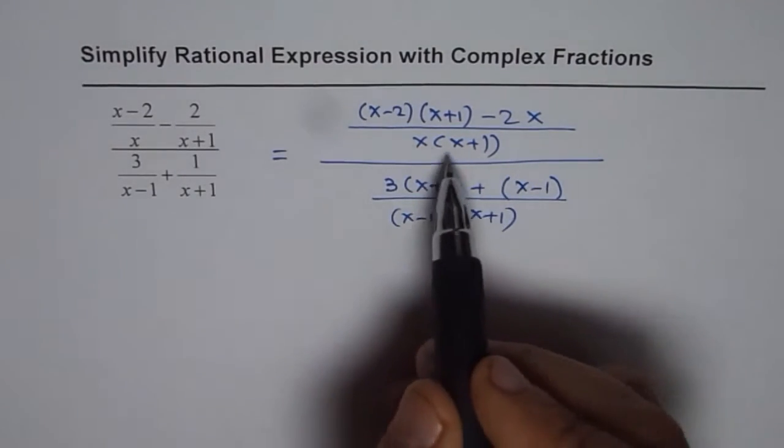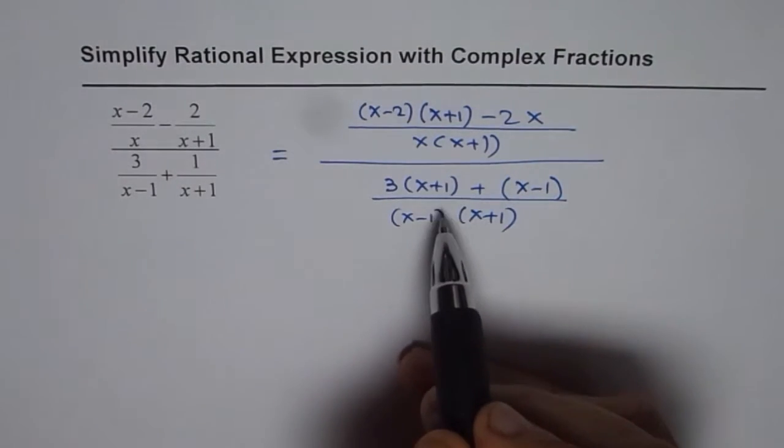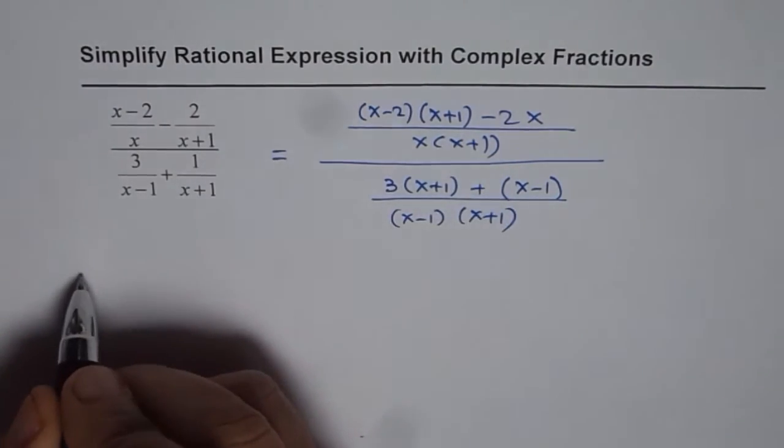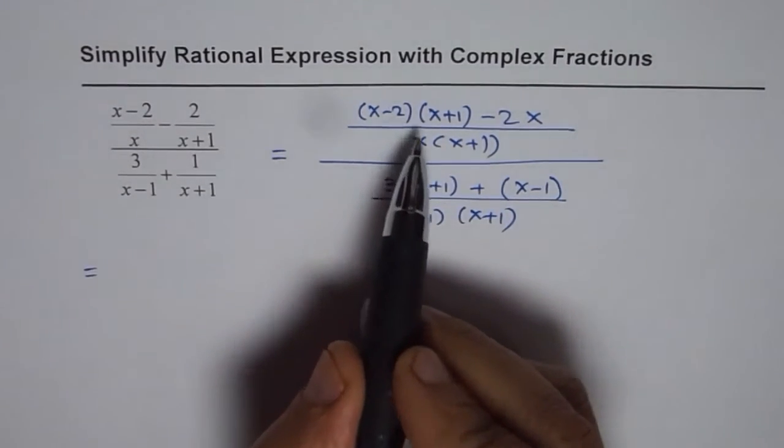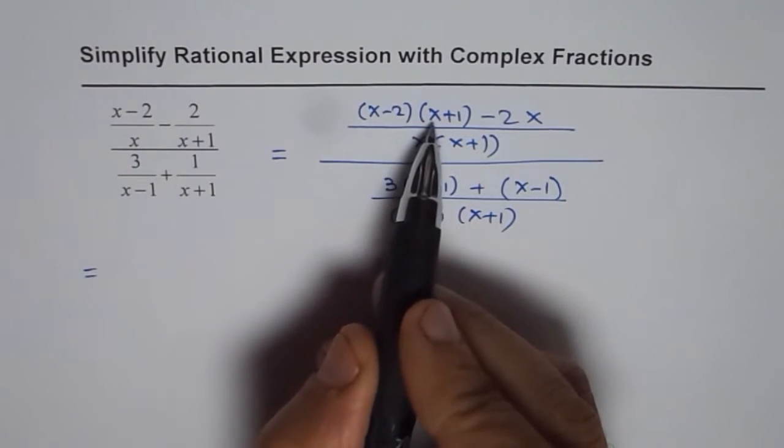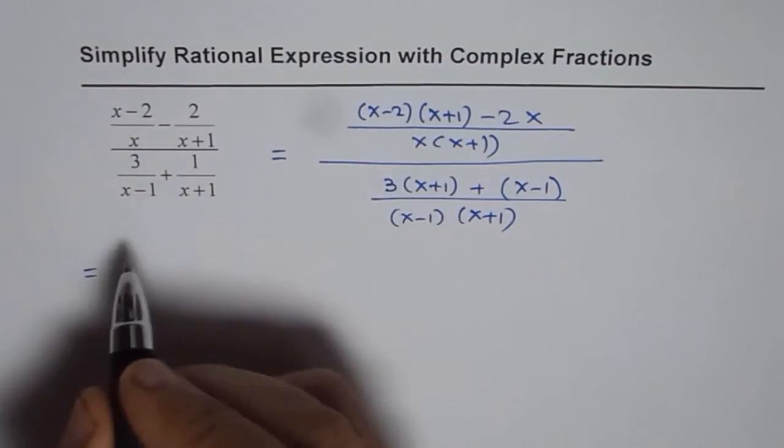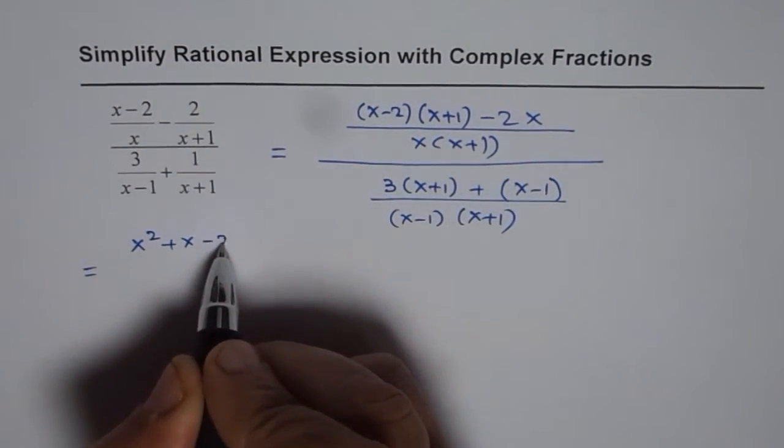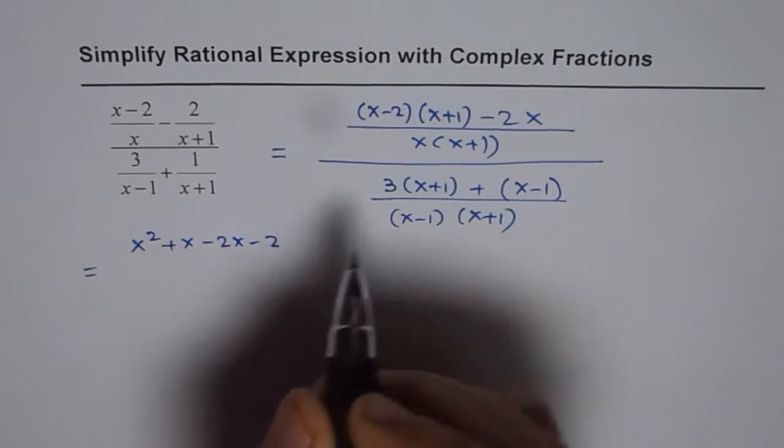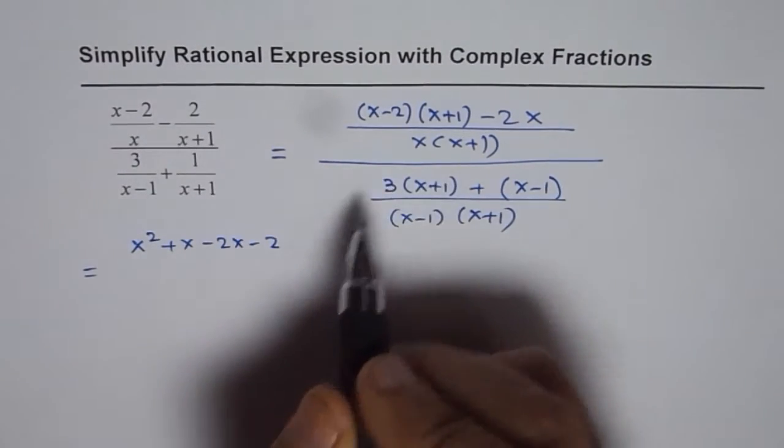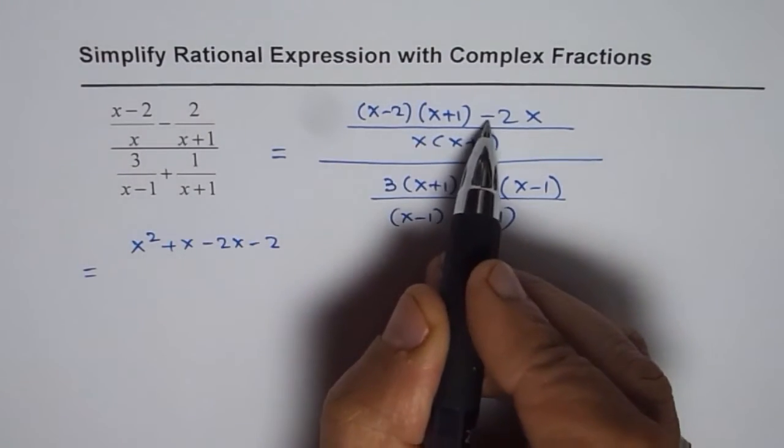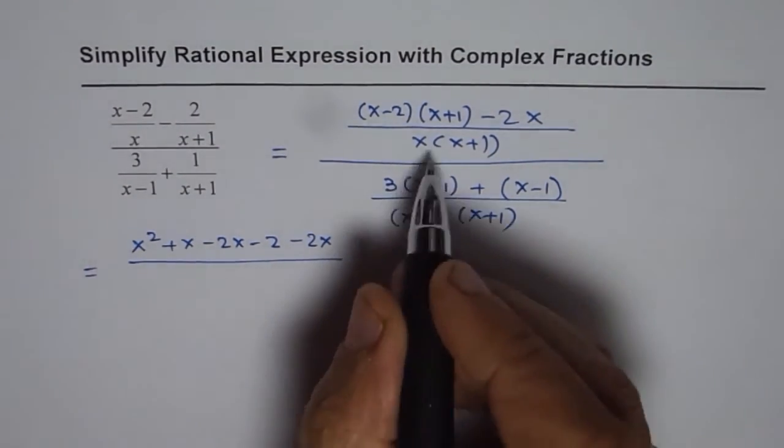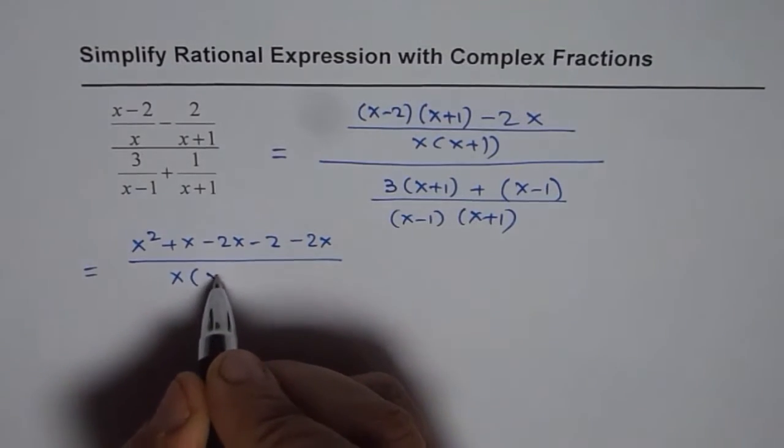Now, it is the numerator divided by the denominator which we can simplify and write as a division statement. Let us expand also. x minus 2 times x plus 1, so x squared plus x minus 2x minus 2. That is expansion of these two binomials minus 2x divided by x times x plus 1.